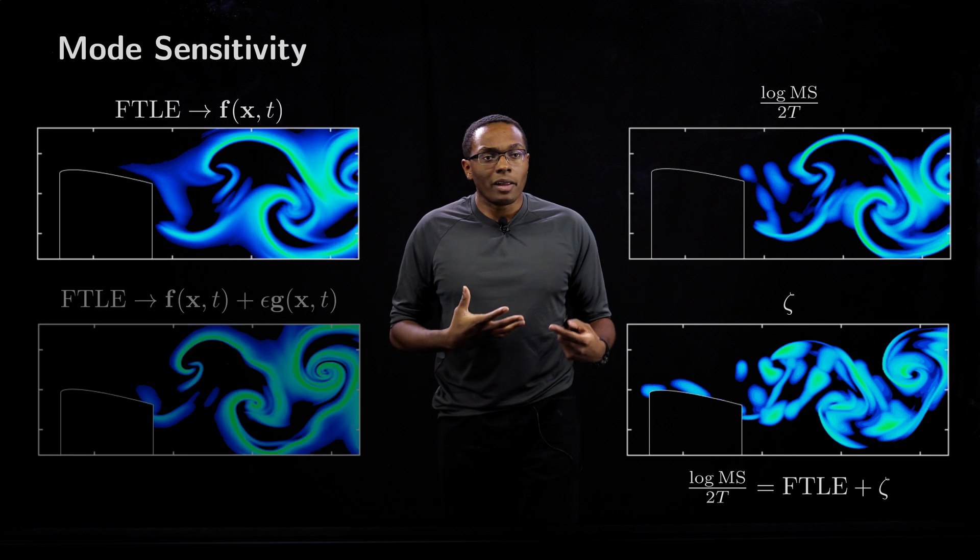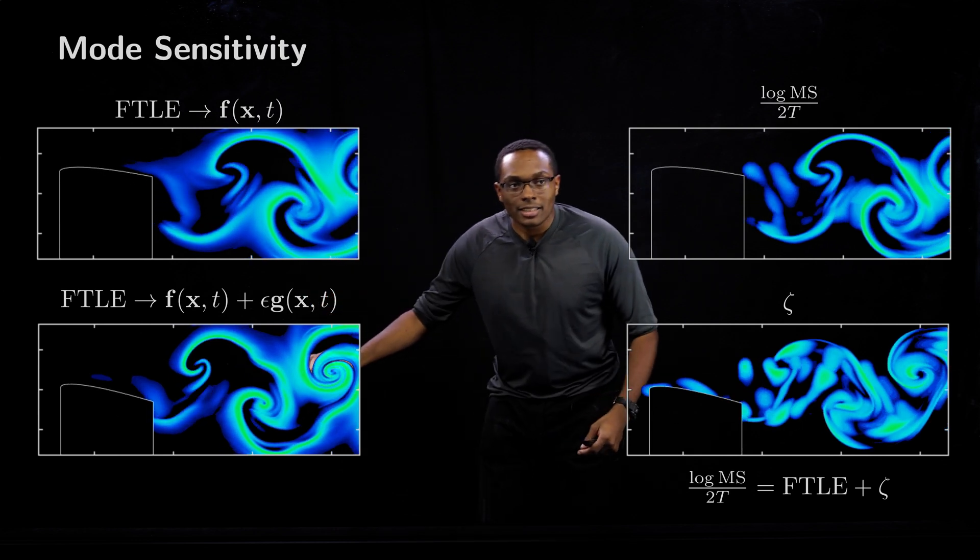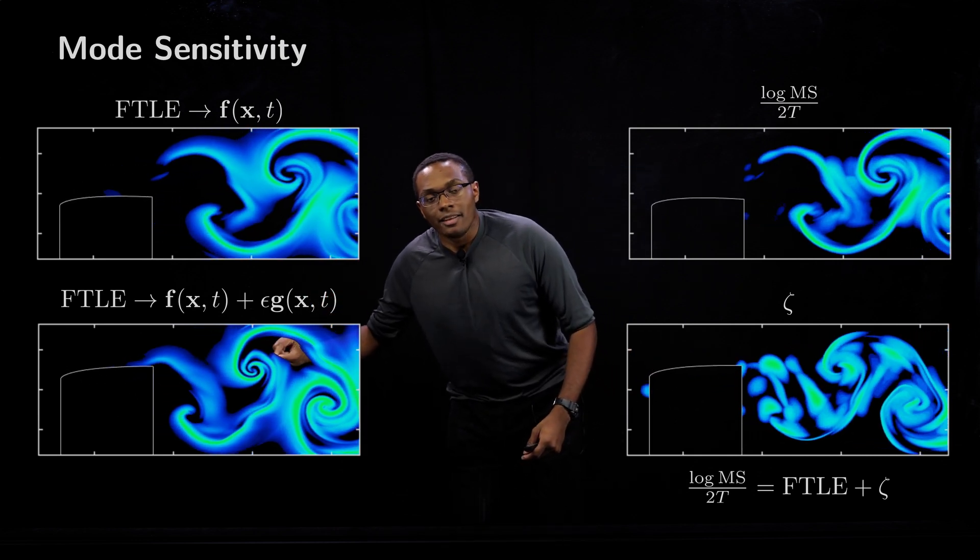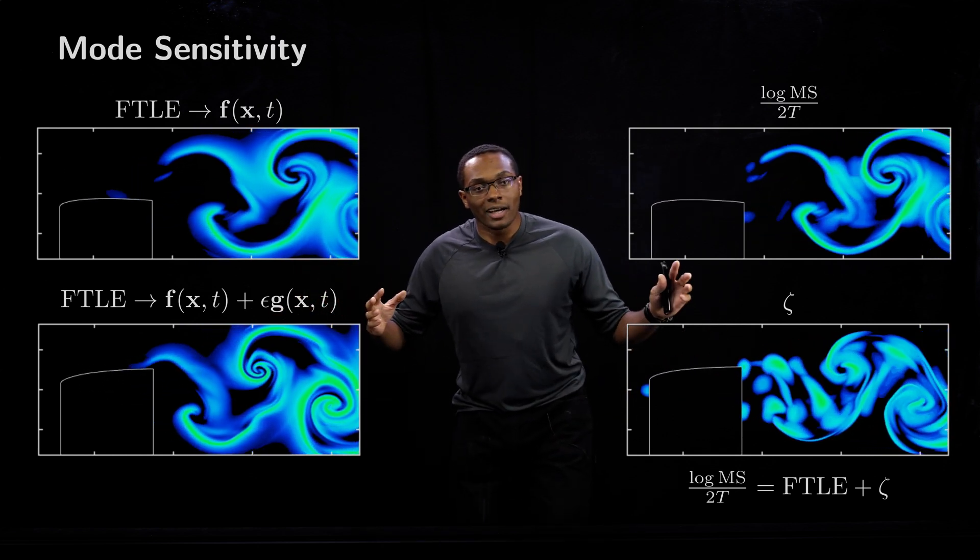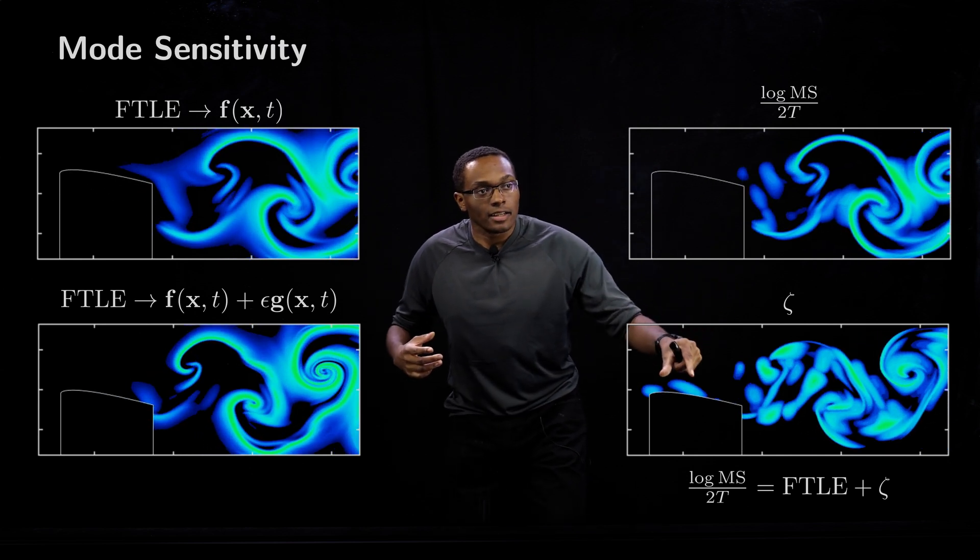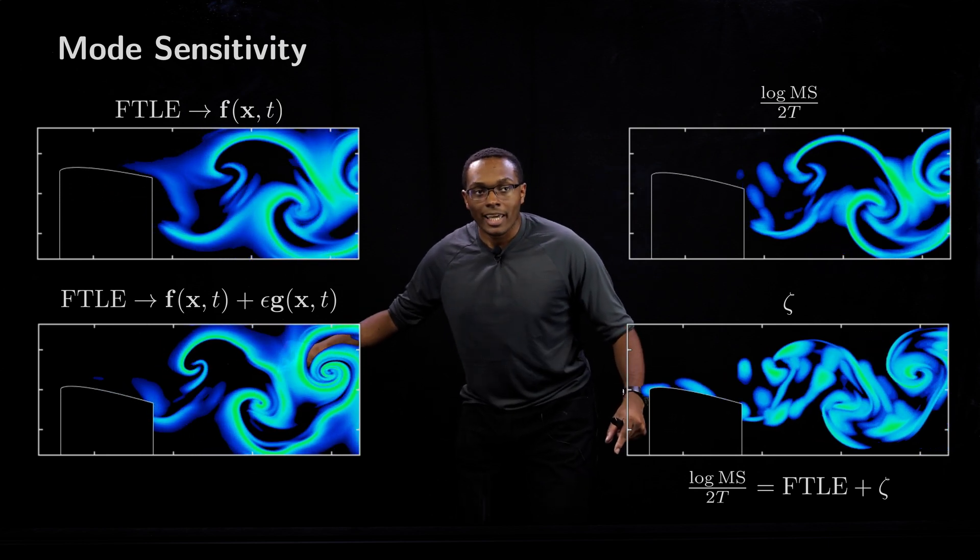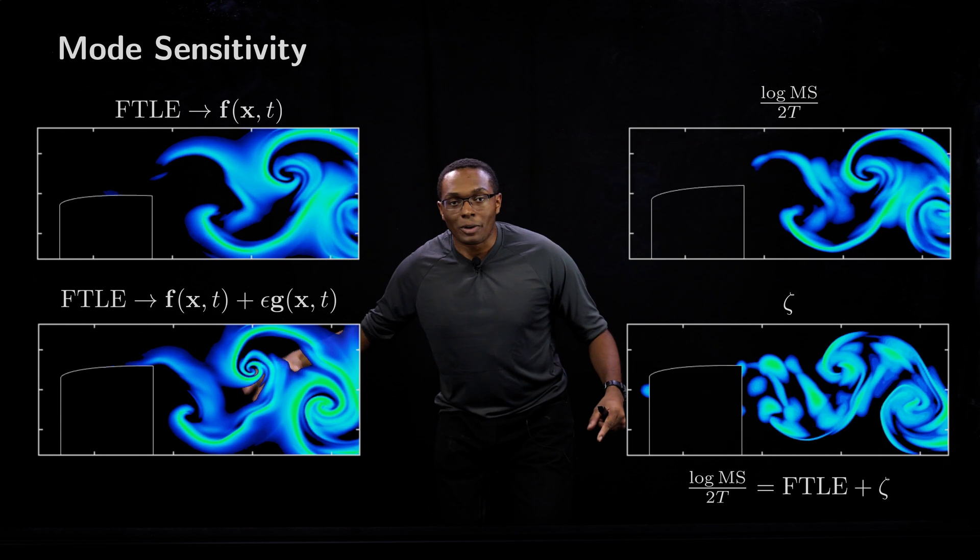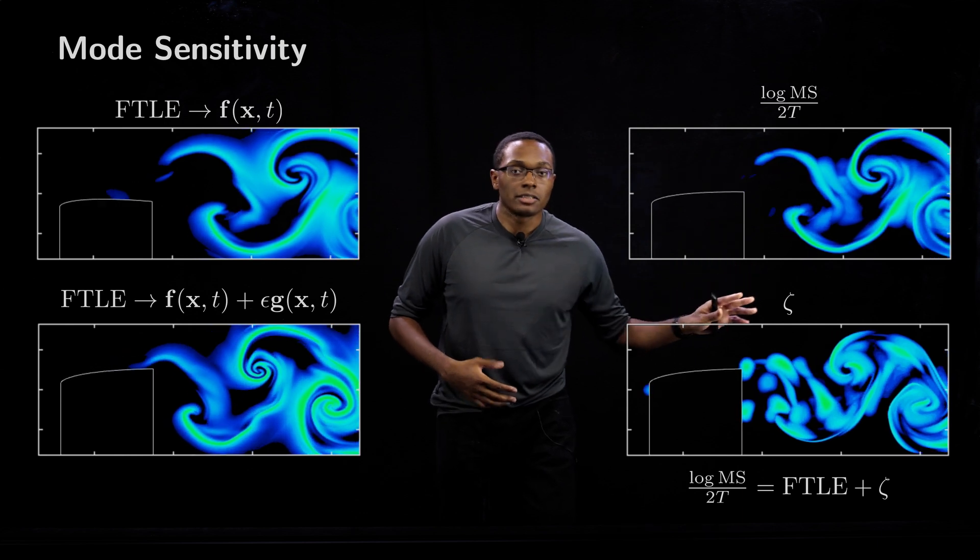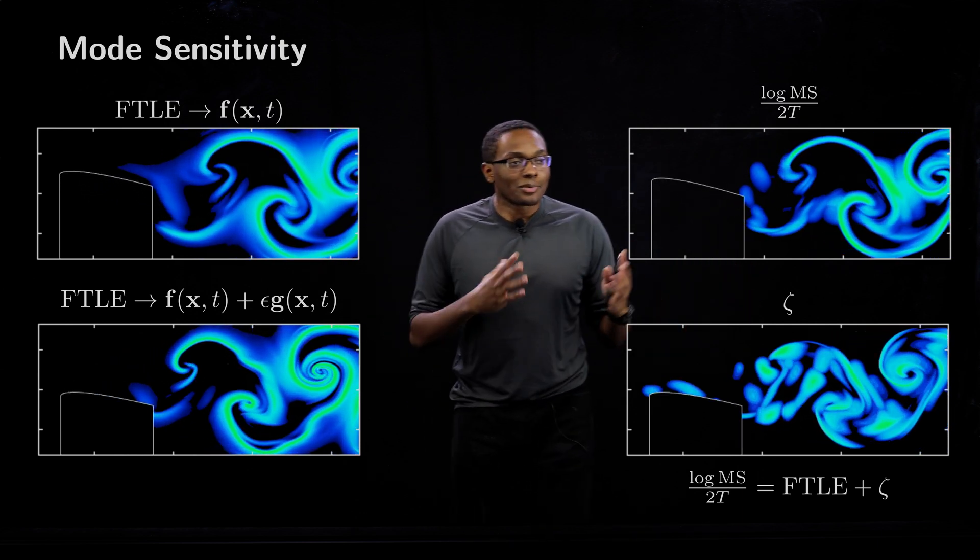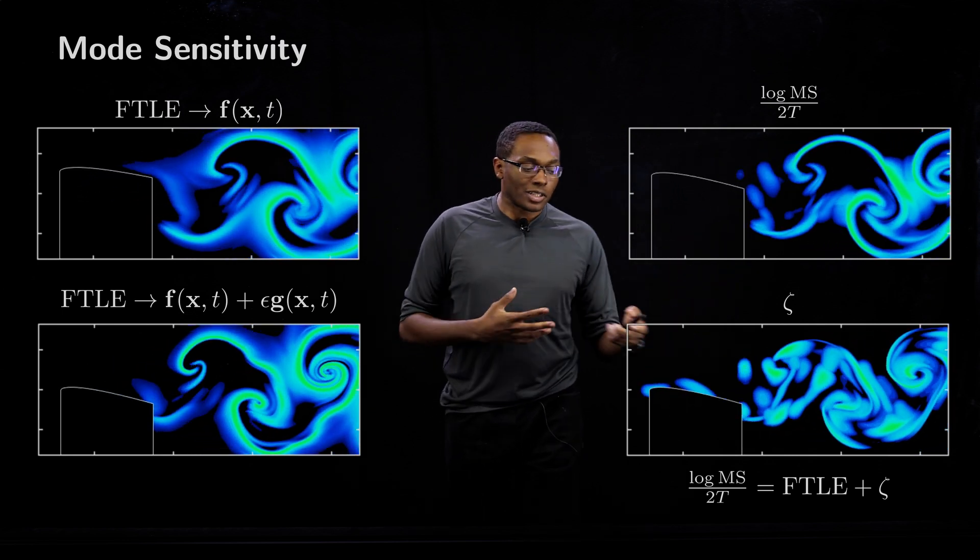If we look at the FTLE of the full system now, including that perturbation G, we can see these ripples in the reverse Karman vortex street. Perhaps one can say that this leading edge vortex developing here is responsible for the shear layer instabilities in this reverse Karman vortex street, these ripples. We were able to determine that information from only this FTLE perturbation term, which we thought was really cool. This is a really cool example in which you can use mode sensitivity to better understand mode structures.